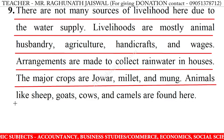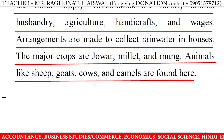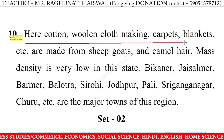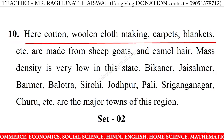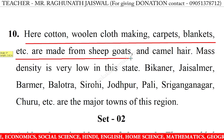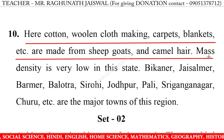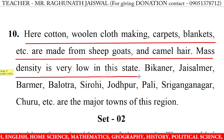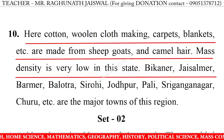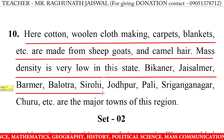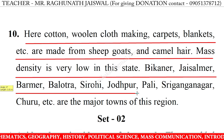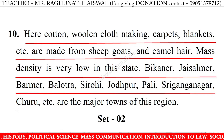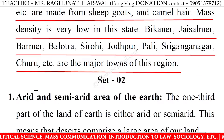Animals like sheep, goats, cows, and camels are found here. 10. Cotton and woolen cloth making, carpets, blankets, etc. are made from sheep, goat, and camel hair. Population density is very low in this region. Bikaner, Jaisalmer, Barmer, Balotra, Sirohi, Jodhpur, Bali, Sri Ganganagar, Churu, etc. are the major towns of this region.